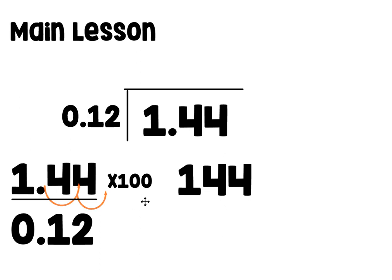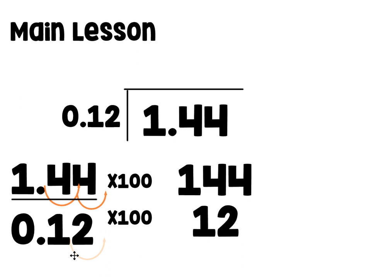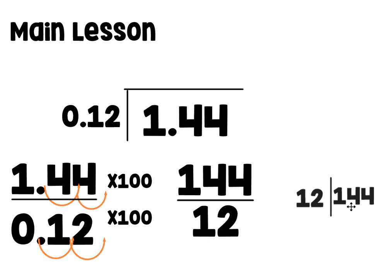Now I need to do the same thing to the denominator, because we need to multiply by a fraction equal to 1 to make an equivalent fraction — the top has to be multiplied by the same thing as the bottom. So 12 hundredths multiplied by 100: the decimal moves two places, giving us 12. So our equivalent whole number problem is 144 divided by 12, which equals 12.